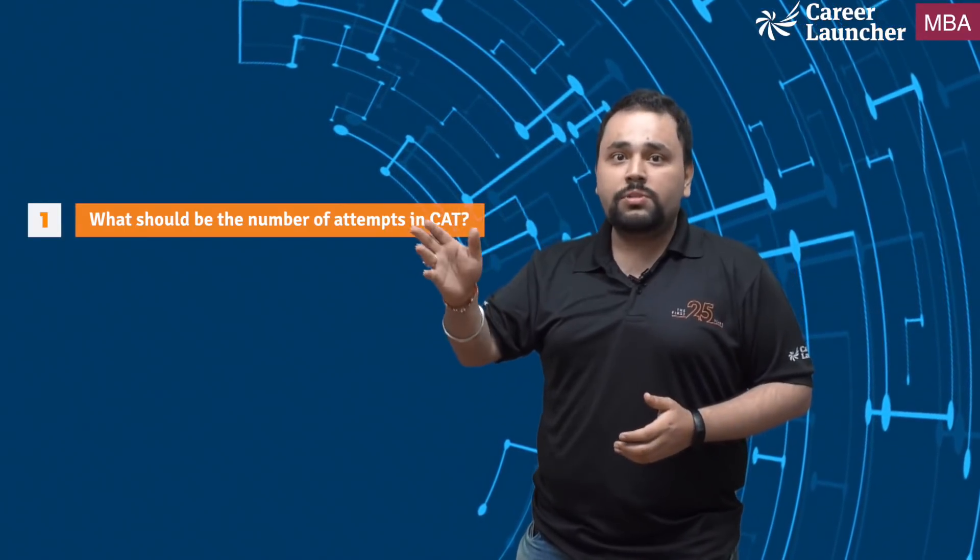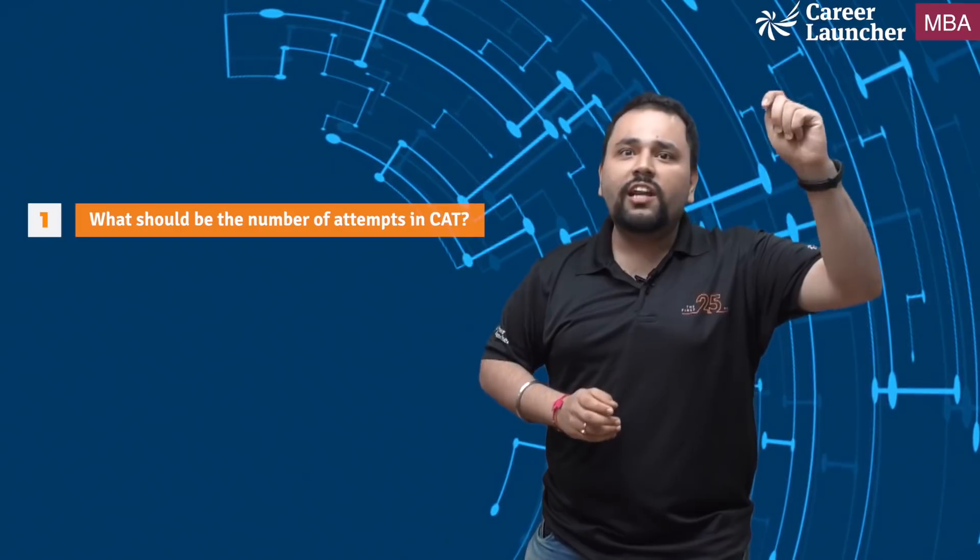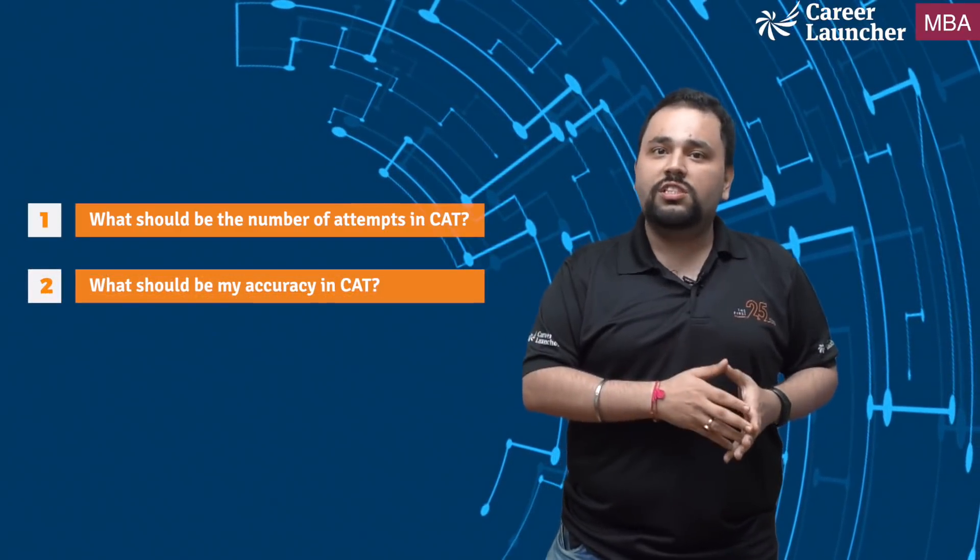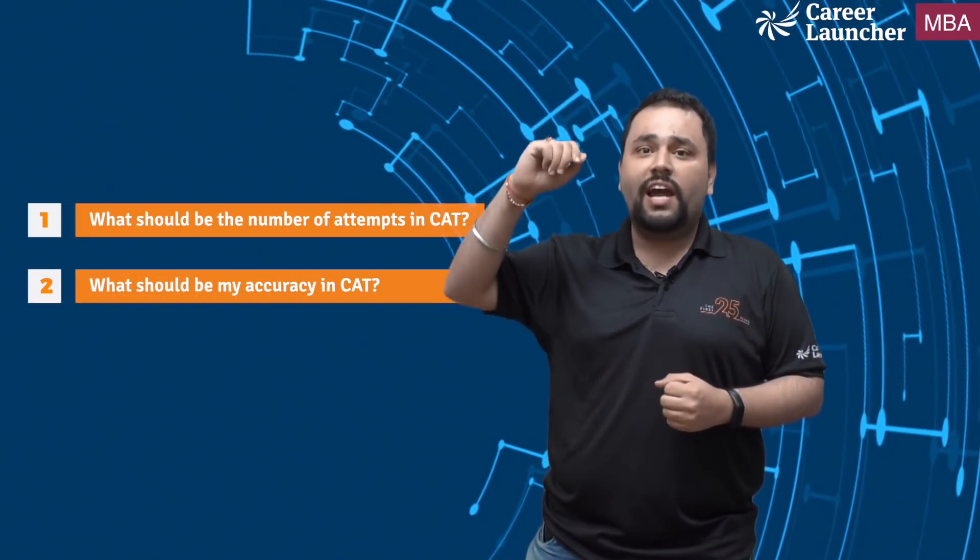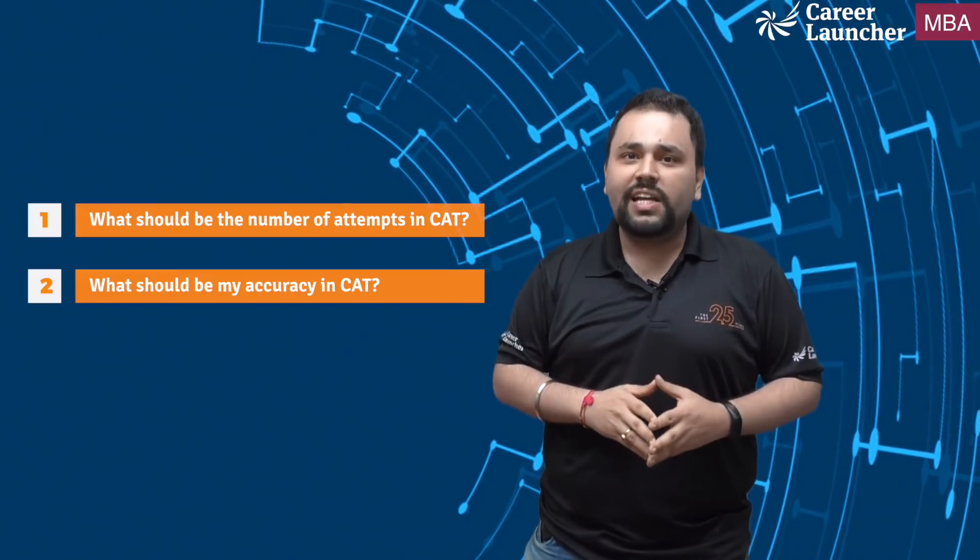These are questions regarding the test taking strategy. So a couple of questions that continuously keep coming up are basically number one, ideally what should be the number of attempts that I should have in the CAT paper? And if I have X number of attempts, what is that golden value of Y that I need to have in terms of accuracy in order to ensure that I scored my desired 95 or 99 percentile?